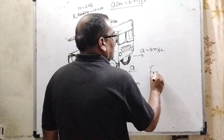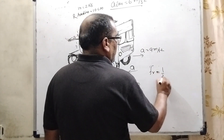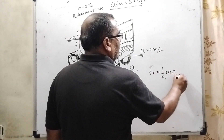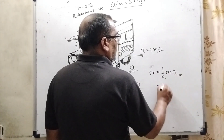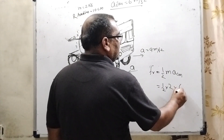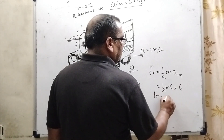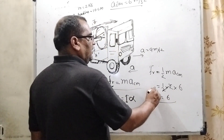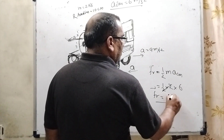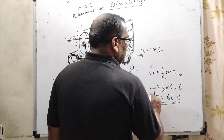Now FR equals (1/2) times M times a_cm. Mass of the disc is 2 kg and a_cm is 6 m/s². So FR equals (1/2) times 2 times 6, and the 2 cancels, giving FR equals 6 N. In vector form, this can be written as 6i Newton, in the positive x-direction.